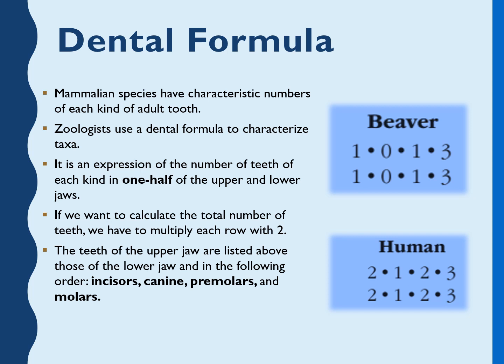To calculate the total number of teeth in an organism, we multiply each row by two. The teeth of the upper jaw are listed above, and those of the lower jaw below. For example, in the case of humans: two incisors, one canine, and premolars and molars. Multiply by two to get the total — 16 upper jaw and 16 lower jaw, giving 32 total.